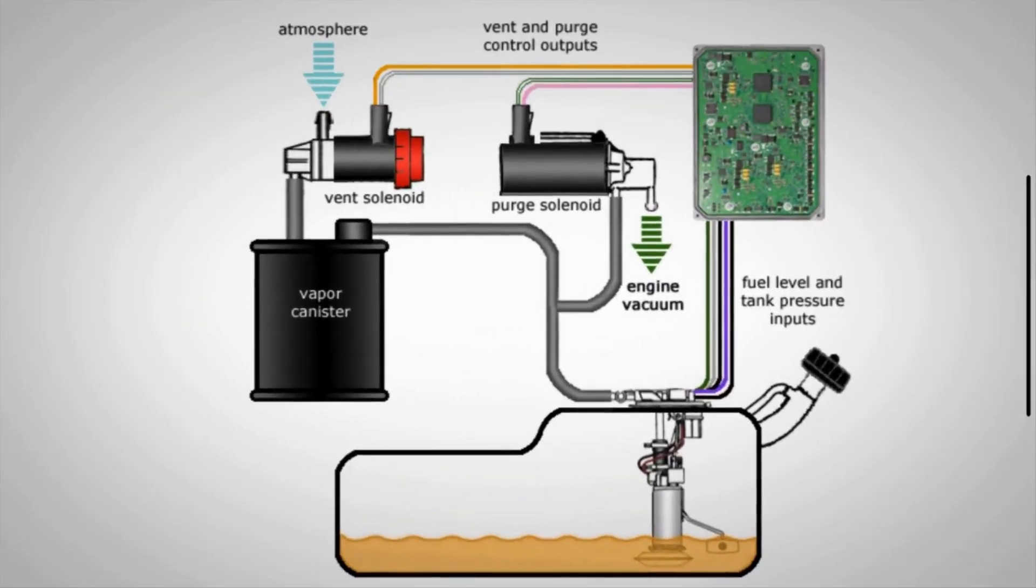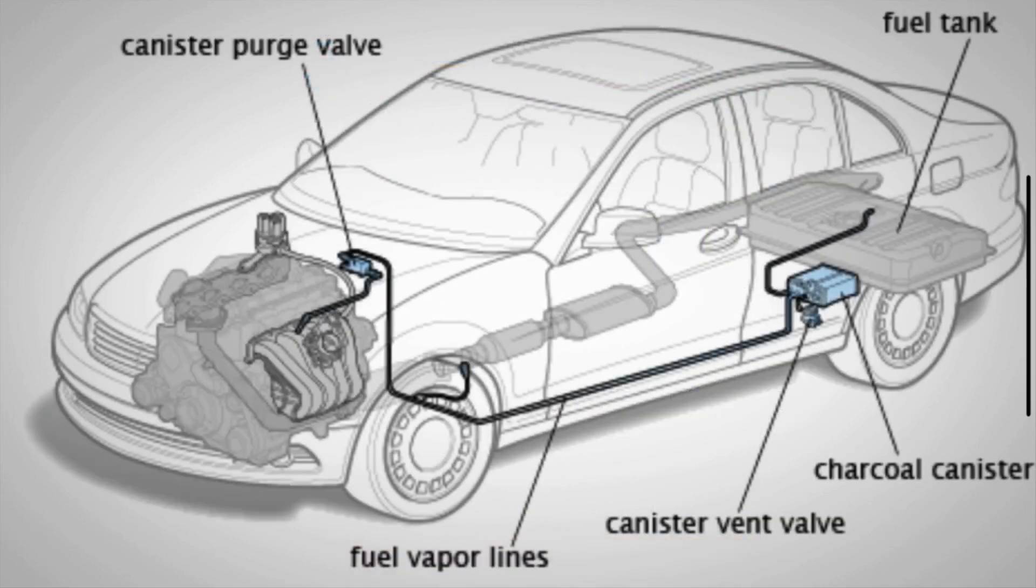The purge valve, also known as the purge solenoid or canister purge valve, is a critical component of the evaporative emission control system in a vehicle.